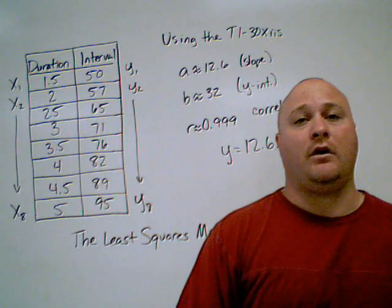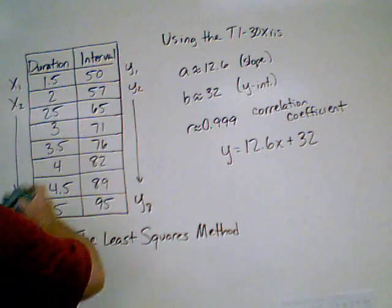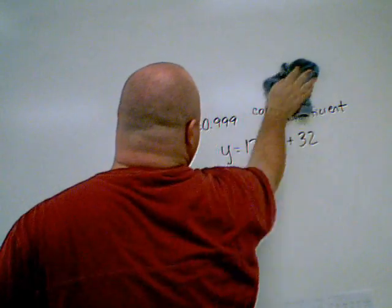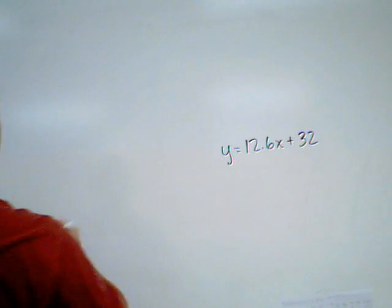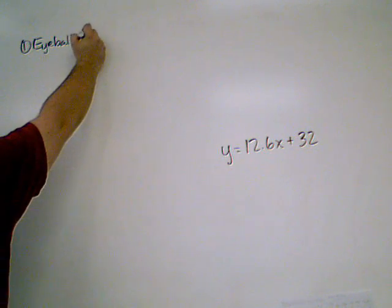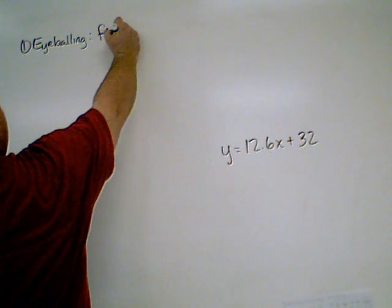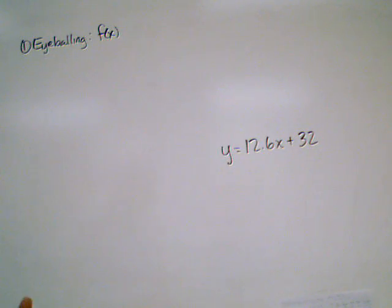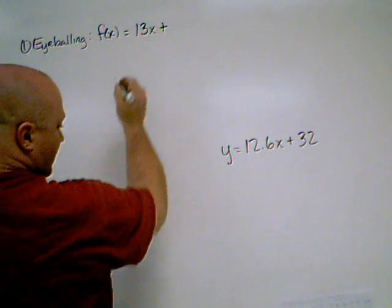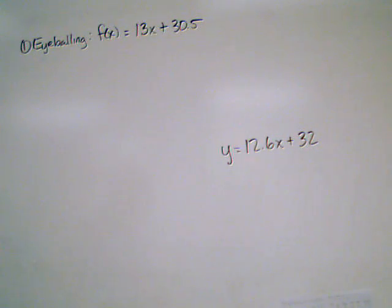Now I'm done with my table. And I'm done really with everything else except my equations. The first one we used, the first method we used, was eyeball. Now the equation we came up with, I'm actually going to change this to f of x instead of y because I want to use function notation here. The function was actually 13x plus 30.5. That was the first one we used.